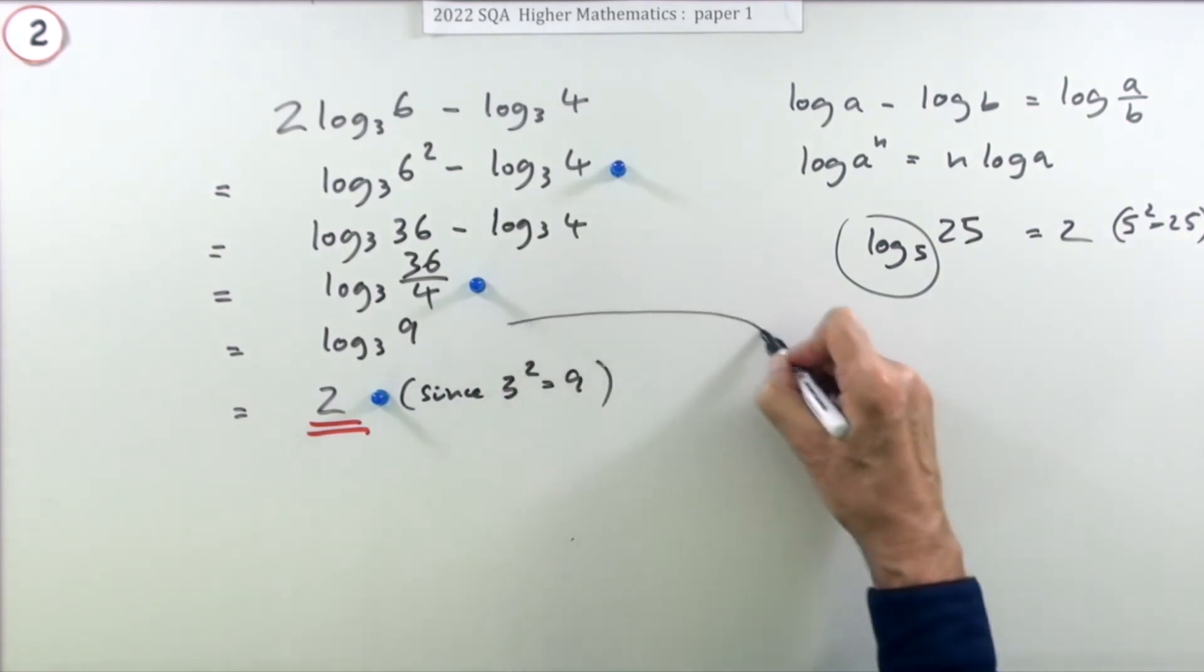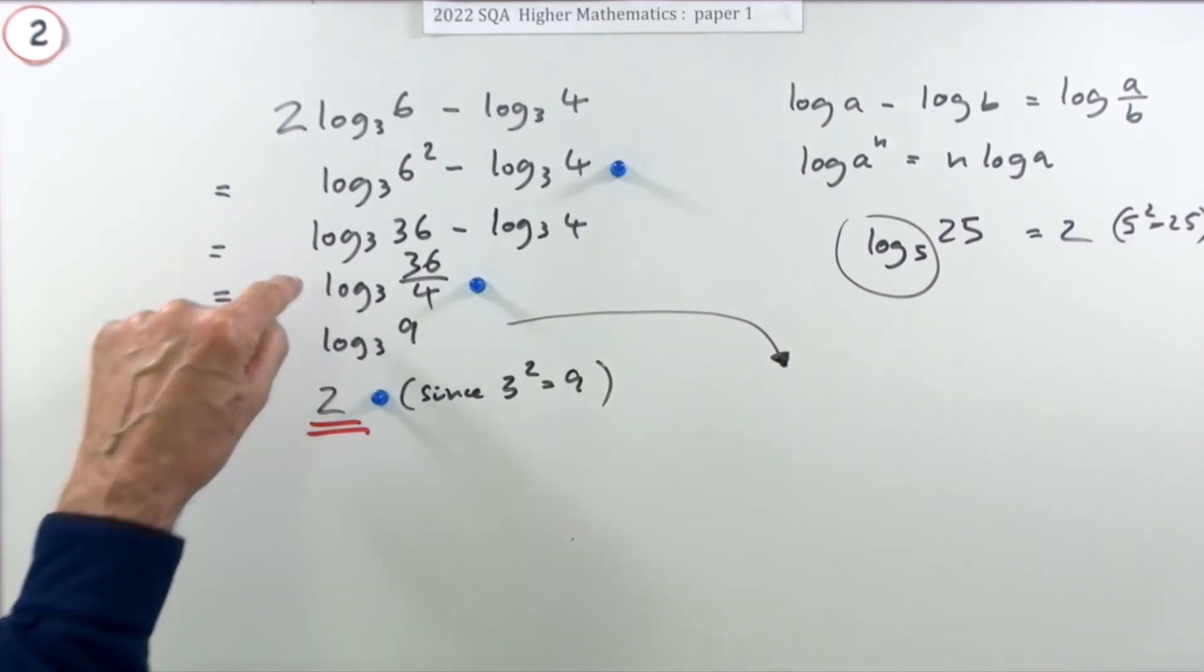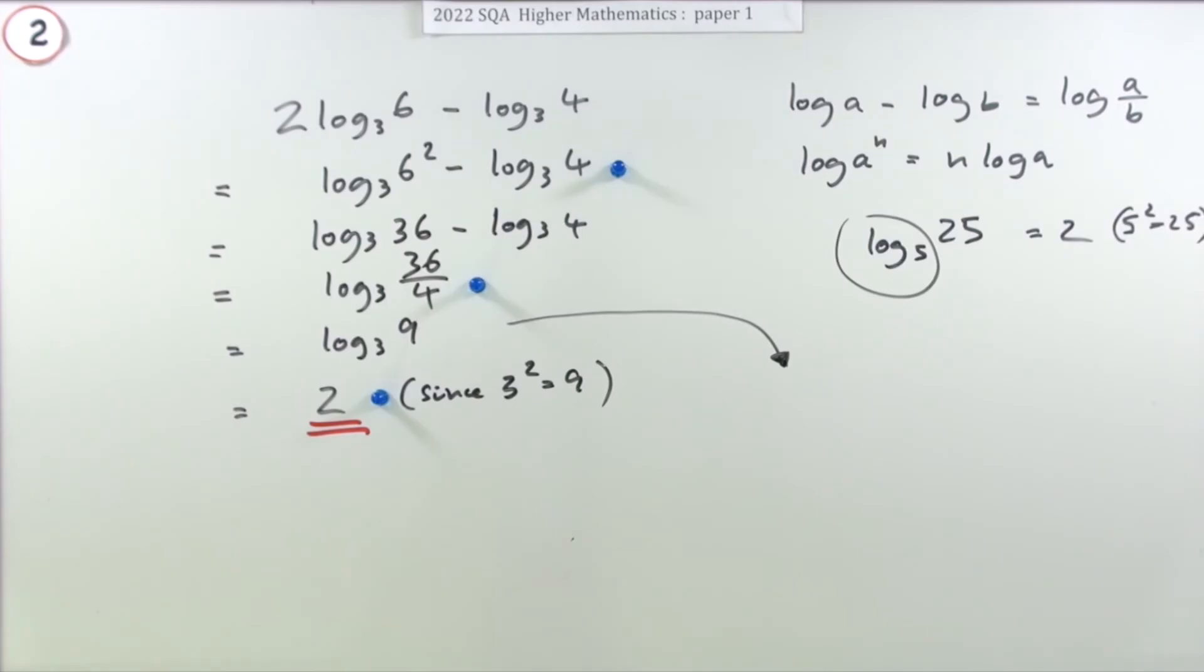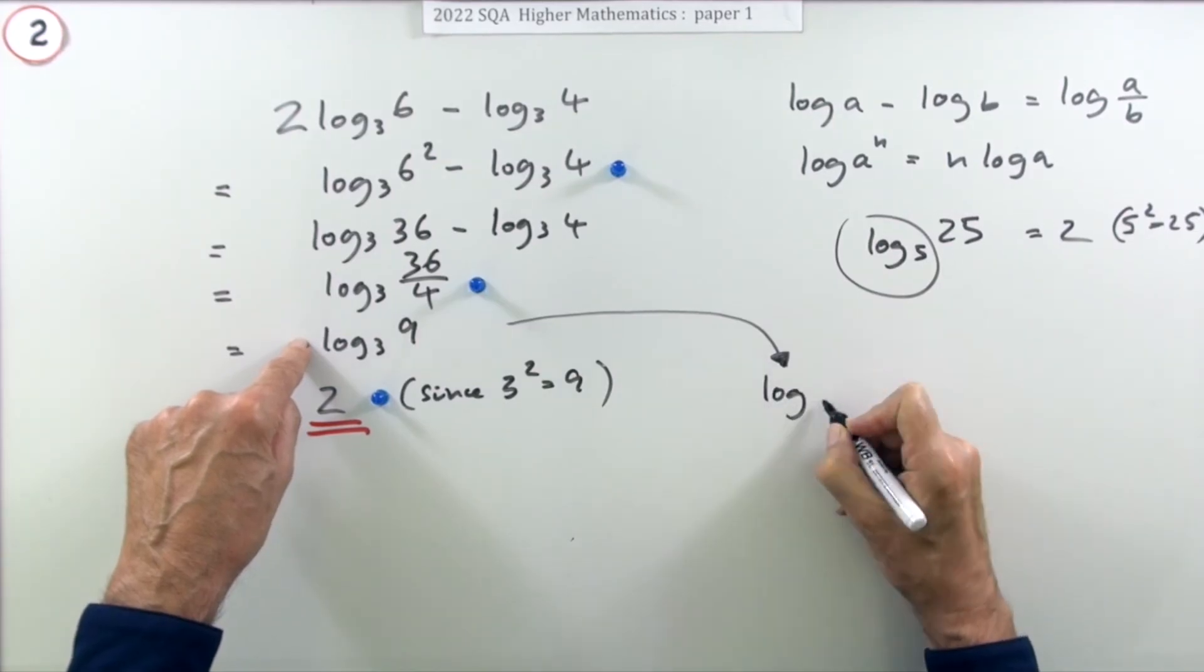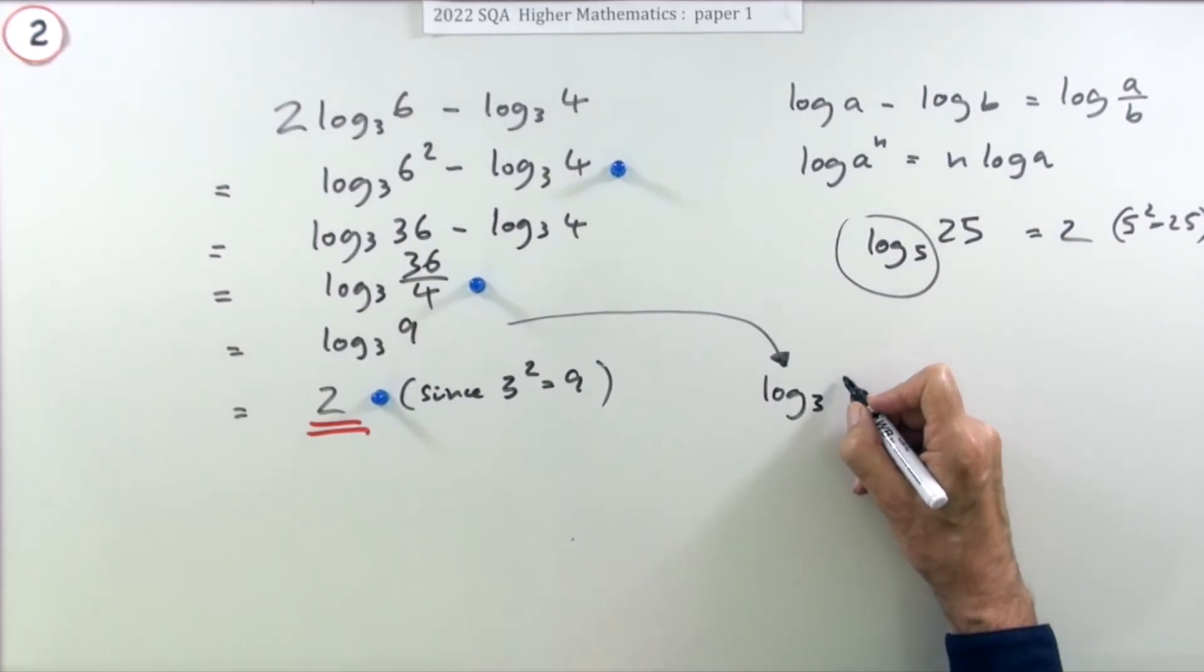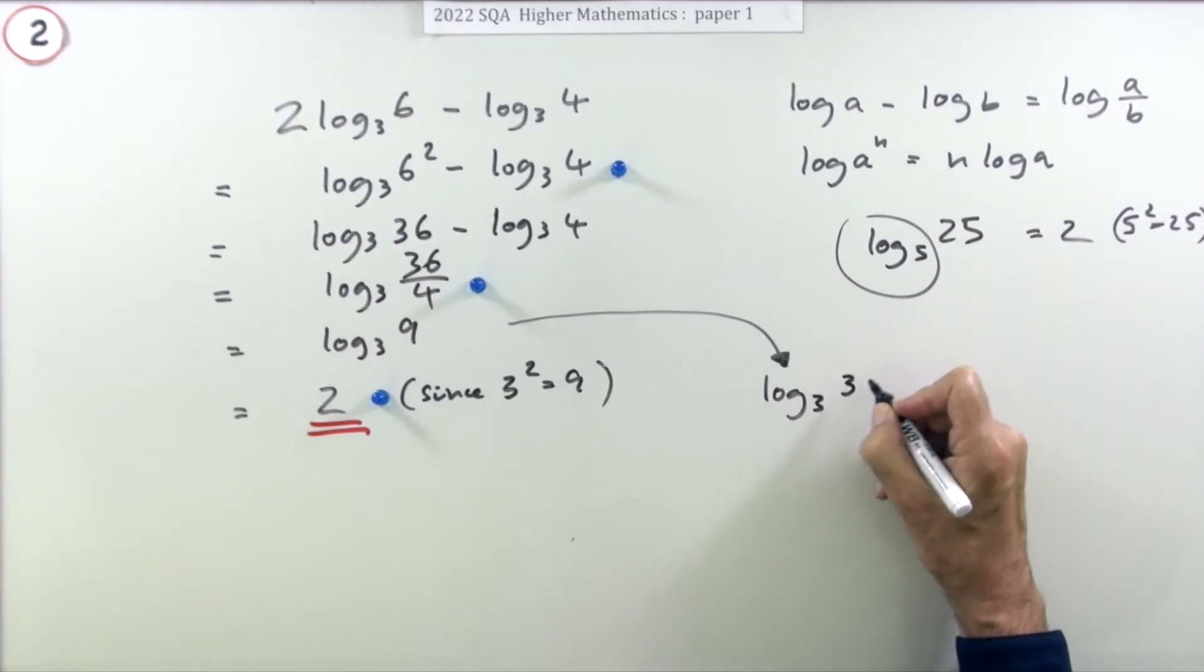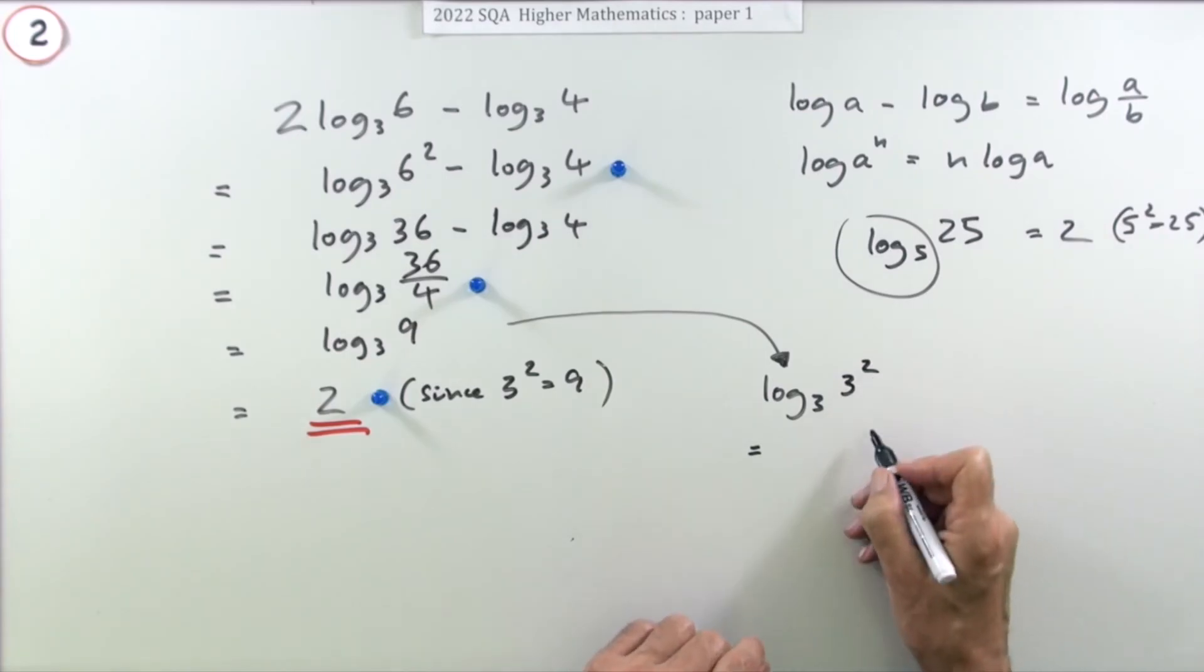Now you could if you wanted, but it's not indicated that this is necessary at all in the marking scheme. The marking scheme just goes from there to there. If you state 2, you get the answer. But you could from here say this if you wanted to be really fastidious: well, log 3 of 9 is the same as log 3 of 3 squared. Now that's screaming at you what power of 3 have I got - it's obviously 2.